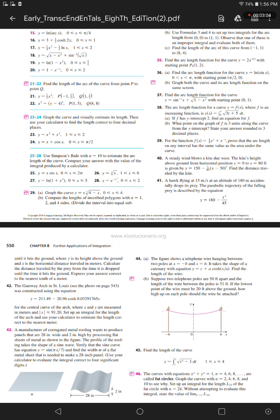Where y is its height above the ground and x is the horizontal distance traveled in meters. Calculate the distance traveled by the prey from the time it is dropped until the time it hits the ground. Express your answer correct to the nearest tenth of a meter.